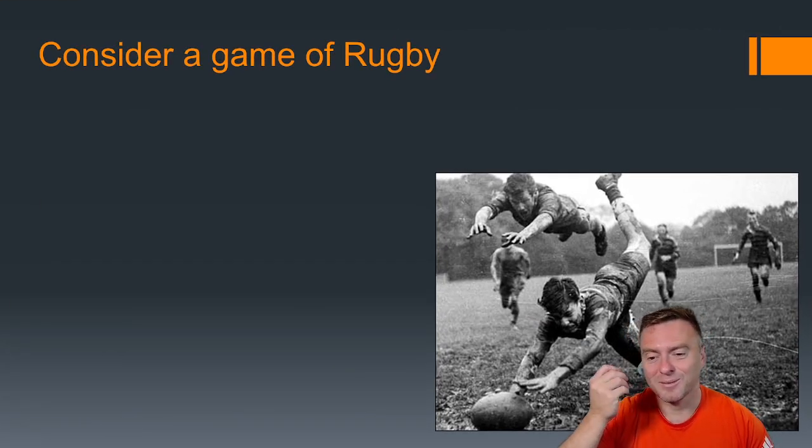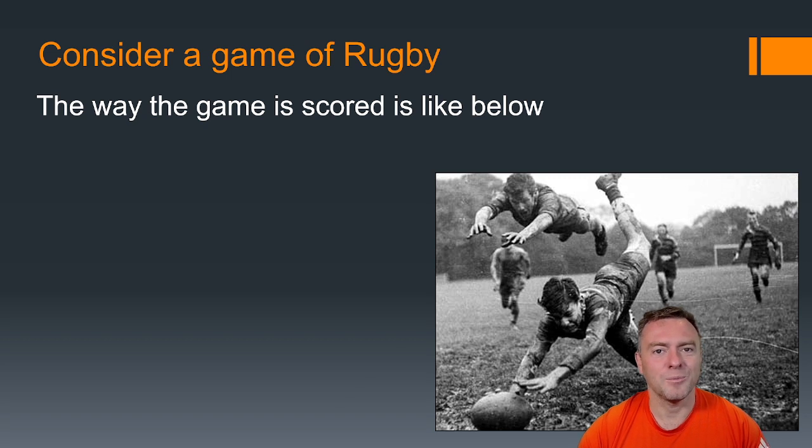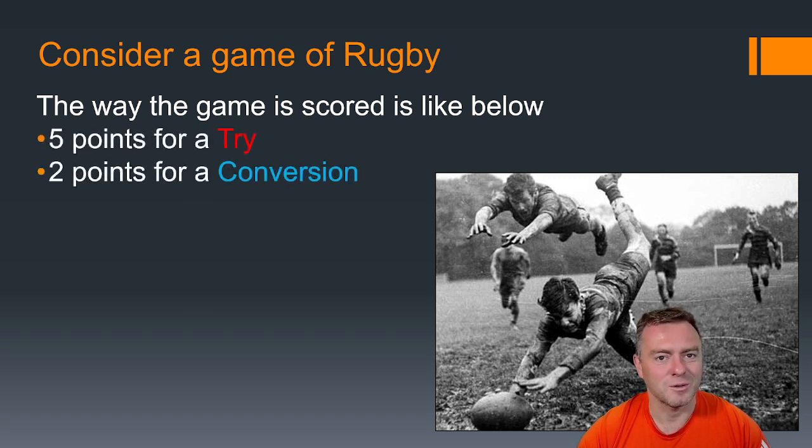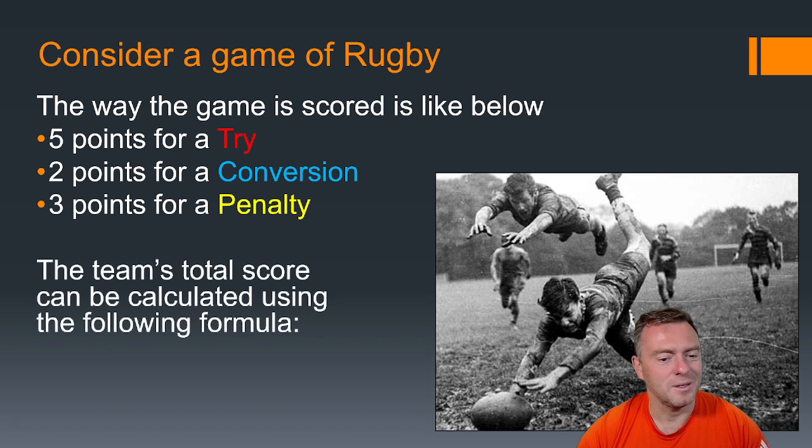For me, I like rugby union. That's probably one of my favorite games. So I love making up a formula for rugby. The way that the game is scored is like below. You get 5 points for a try, 2 points for a conversion, and then 3 points for a penalty kick. So we can actually make a rugby formula and it's pretty simple.